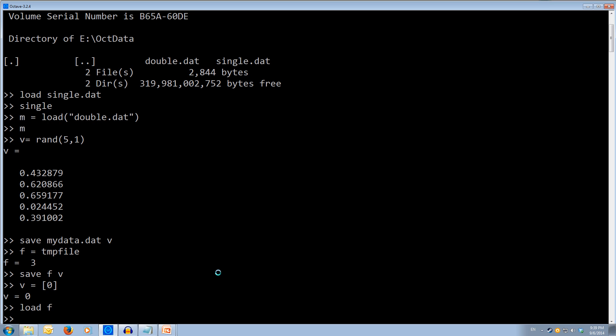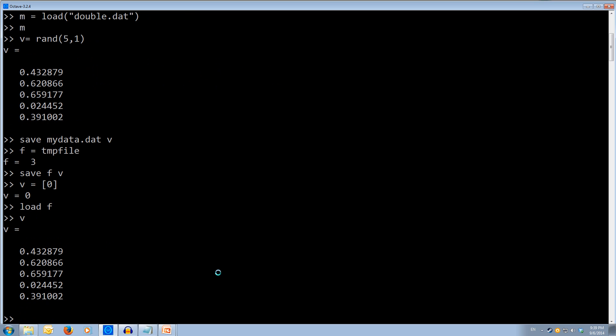Now what we're going to do is we're going to load back in from our temp file. So load f. Now when we load f, if we type v again, we notice we've got all our values back. Now Octave stores what the variable name was when it's saved out to a file. So that way when you load the value in, it will load it back into the original variable name.